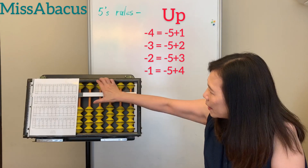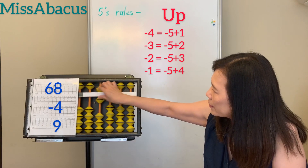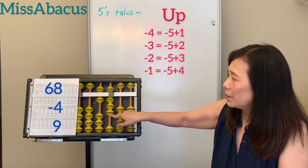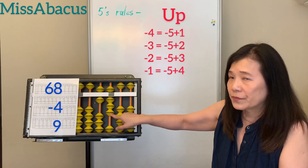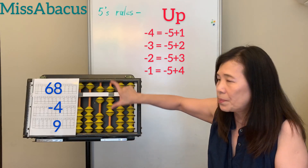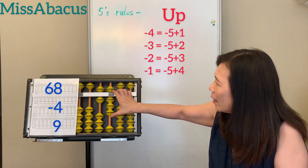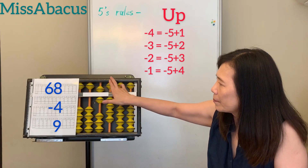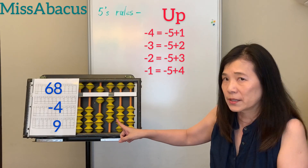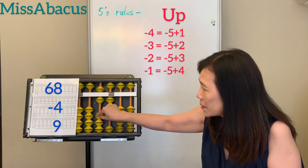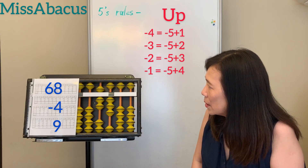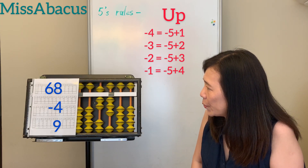Next problem: 68 minus 4. You only have three left, but you have 5 — use the 5's rule: up 5, up 1. Then for minus 4, plus 9: of course 10's rule — for the 9: minus 1, plus 10. Answer: 73.